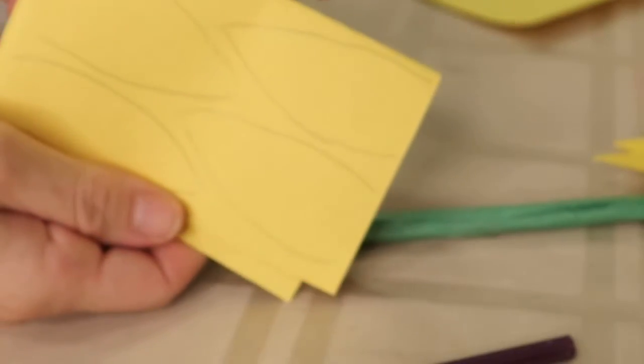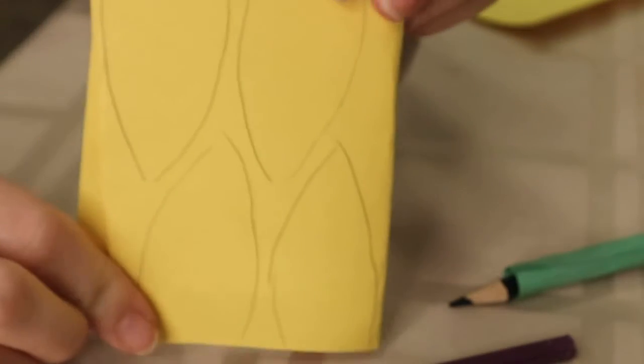First, I'm going to take my yellow paper. I folded it in half twice so that I have several layers. If you can see, I drew just a few shapes that sort of look like petals, and I'm going to cut them out.